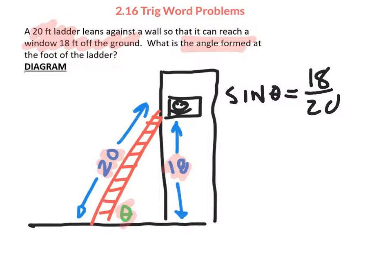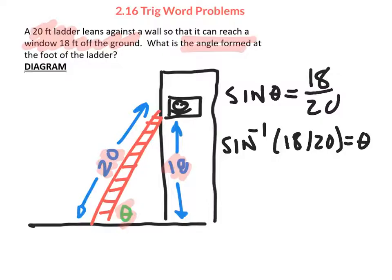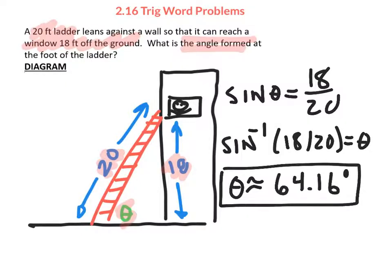We know that when we have the ratio but not the angle, we use the inverse function to obtain it. When we do that, we get approximately 64.16 degrees. Typically we go to two decimal places as a convention, but certain problems may ask for a different level of accuracy.